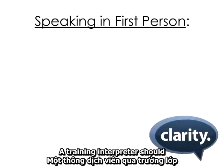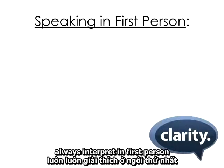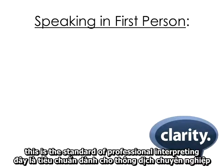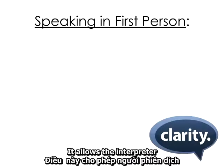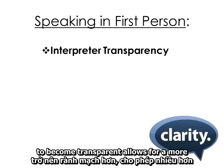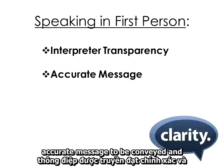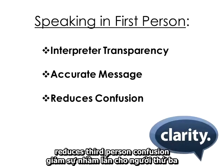A trained interpreter should always interpret in first person. This is the standard of professional interpreting. It allows the interpreter to become transparent, allows for a more accurate message to be conveyed, and reduces third-person confusion.